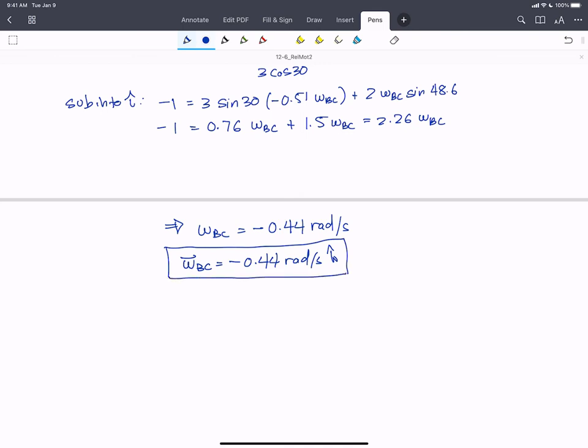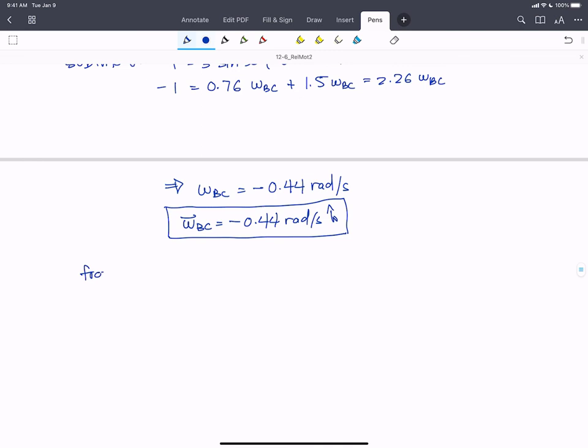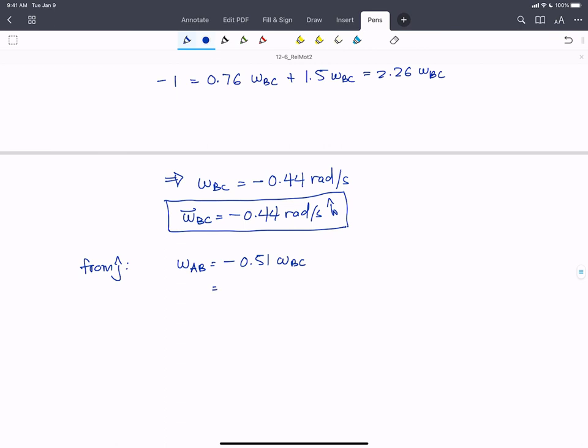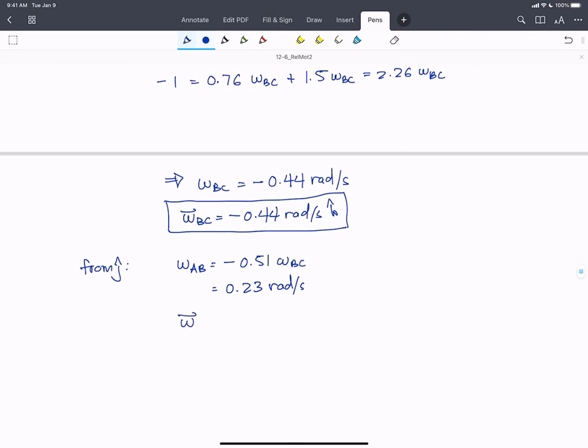Okay. So that's half our answers. And then from the j-hat equation again, we know omega AB is minus 0.51 omega BC. That's going to be equal to 0.23 rads per second. So our scalar, this is telling us that we did get our direction right. So if we assign it positive, we get a positive scalar, we got our direction right. And so our vector, omega AB equals 0.23 rads per second in the k-hat direction.